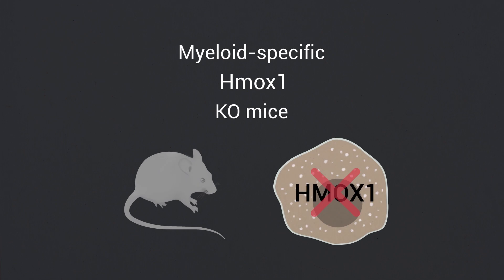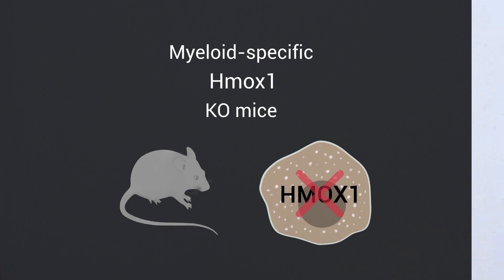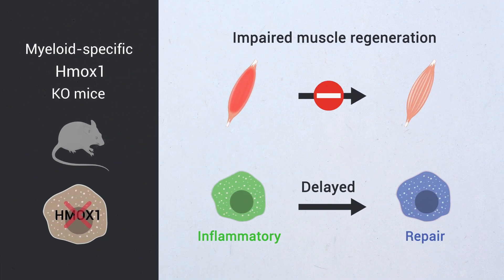Furthermore, inactivation of heme-oxygenase-1, one of its most stringently deregulated genes, in macrophages impairs muscle regeneration by changing the dynamics of the macrophage phenotype switch.